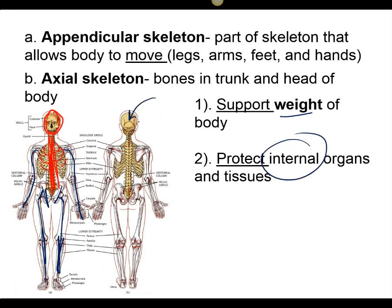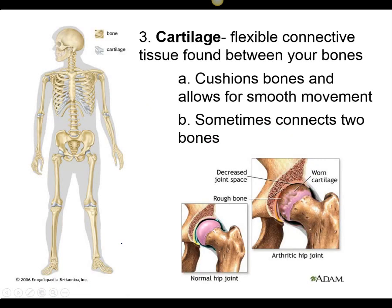What organs are in there? The brain — that's being protected. The organs inside of our ribcage are our lungs and heart. And then also within our pelvic cavity, we have our reproductive organs like our uterus and other important organs for the reproduction of offspring.